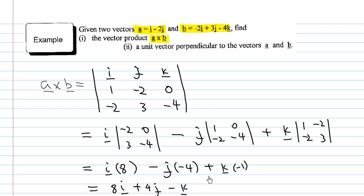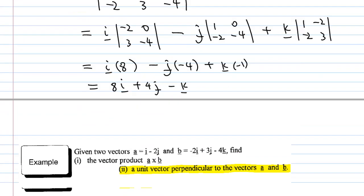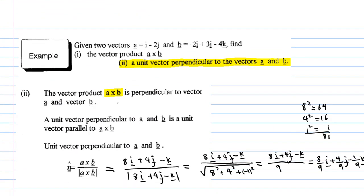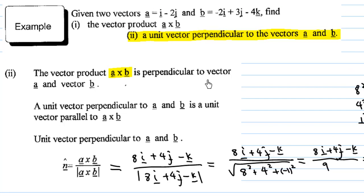So I have a cross b equals 8i plus 4j minus k. Now look at the second part: finding a unit vector perpendicular to vectors a and b. You need to know that a cross b is automatically perpendicular to both vectors a and b. So all you need to do is find a unit vector by dividing a cross b by its length, which gives a unit vector perpendicular to both a and b.